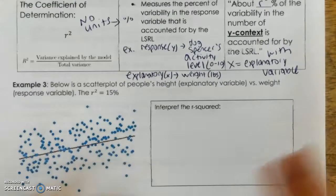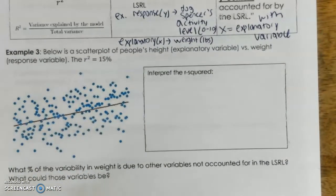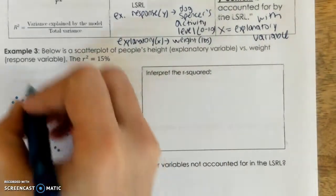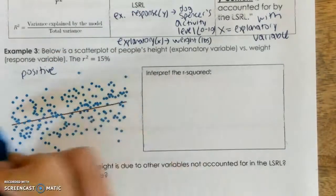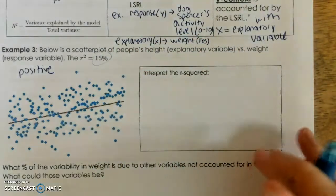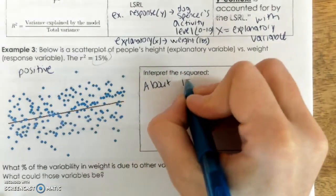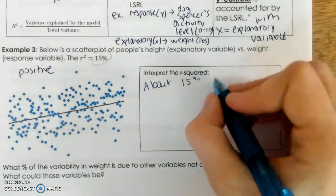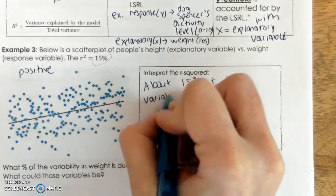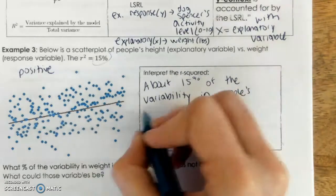All right, so let's get to an example. All right, below is a scatterplot of people's height, the explanatory variable, and weight, the response variable. So, basically, it's saying how tall you are affects how much you weigh, right? There is some relationship, and from this scatterplot, we can tell that the relationship is positive, right? The line is going up from left to right.